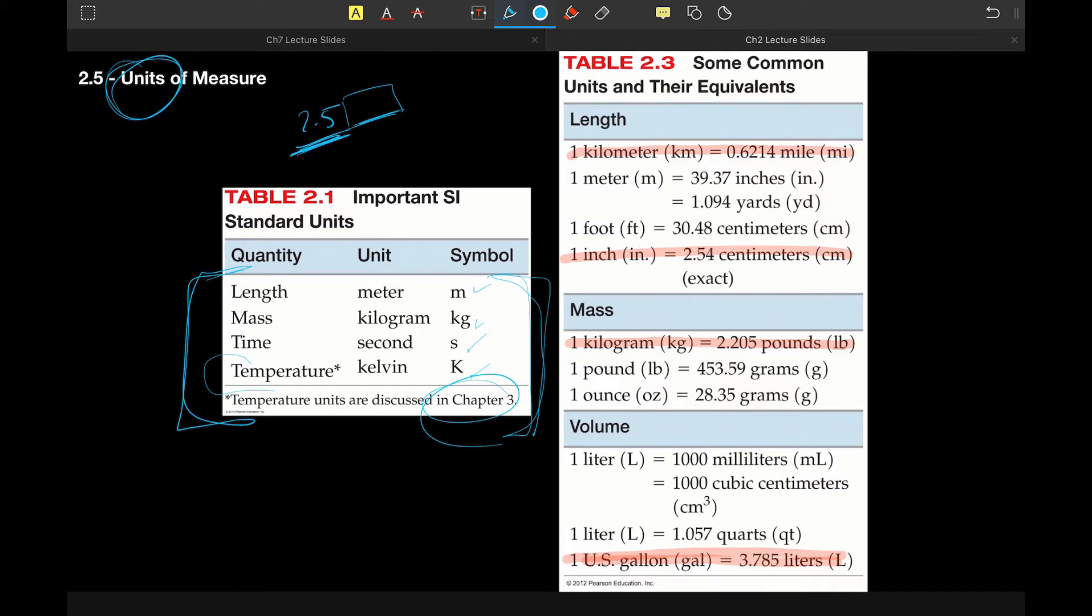Likewise, if we are measuring something in the United States, often we will grab a ruler and that ruler will be marked off in inches. Whereas if we grabbed a ruler in pretty much anywhere else, it would be marked off in centimeters, which means again, we need to be able to relate the two so that way we can understand what the relative size of something is.